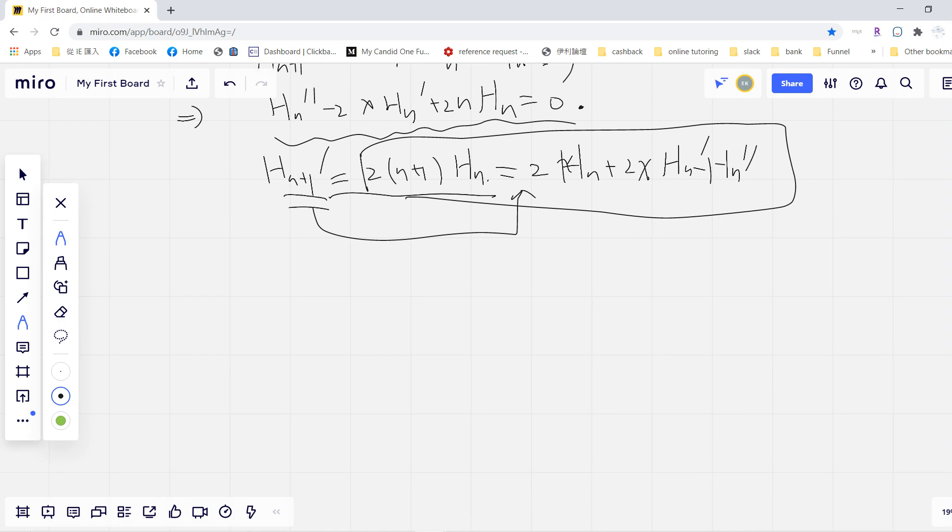Okay, and we will start from here. Then we know that if we times the exponential negative x squared, then this term becomes the Sturm-Liouville problem. So that means, oh my god, this is our weight.